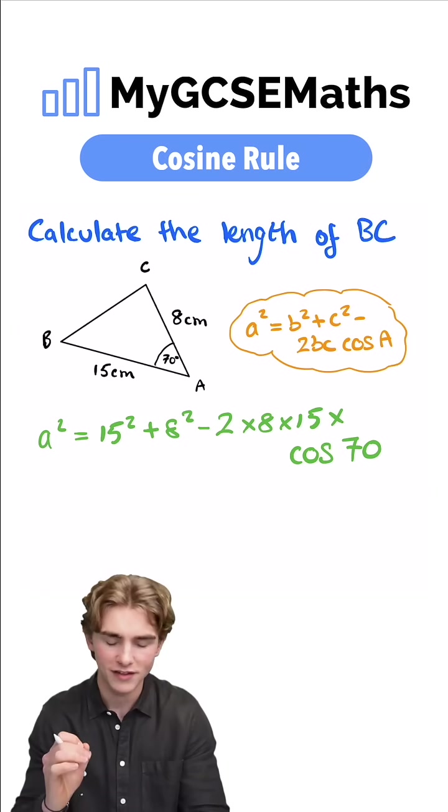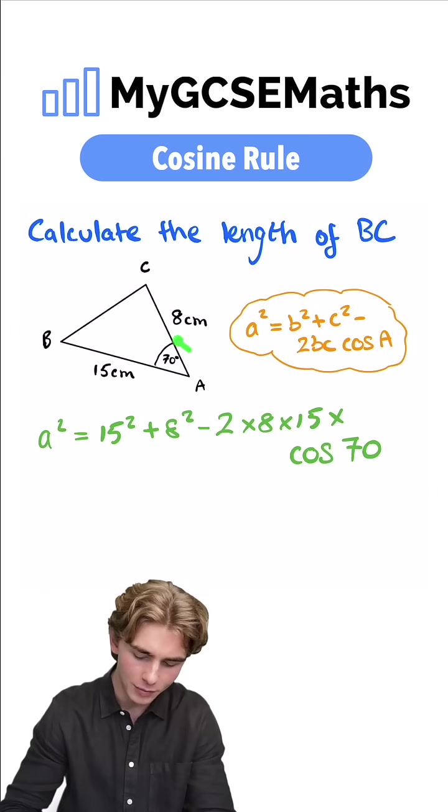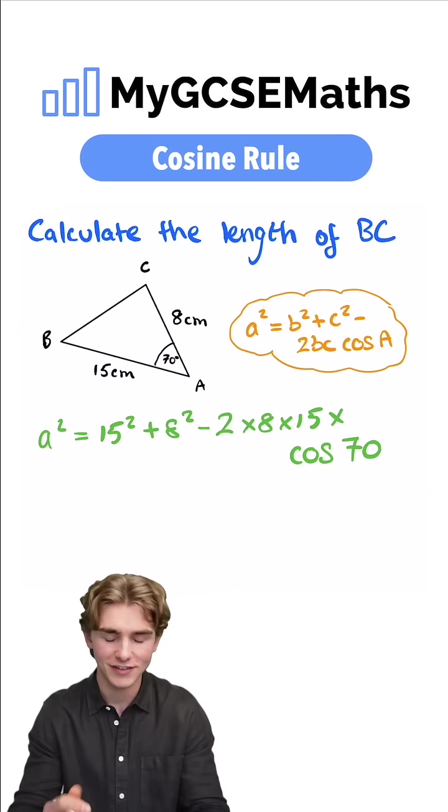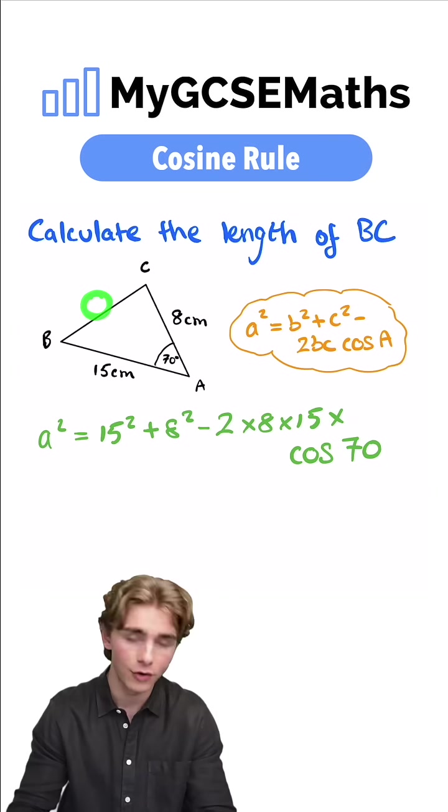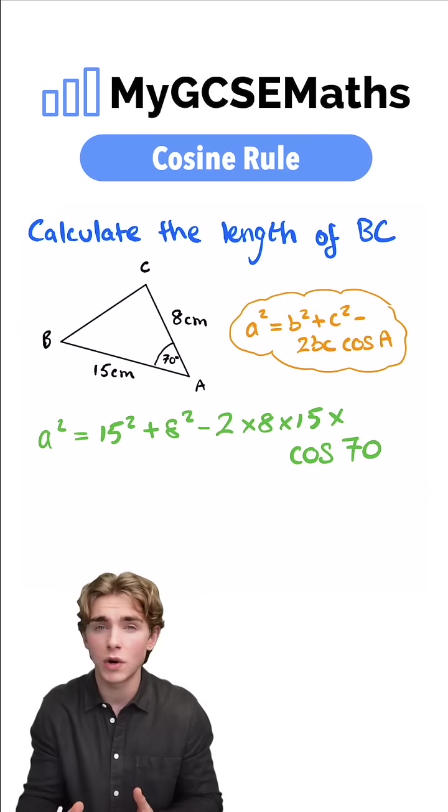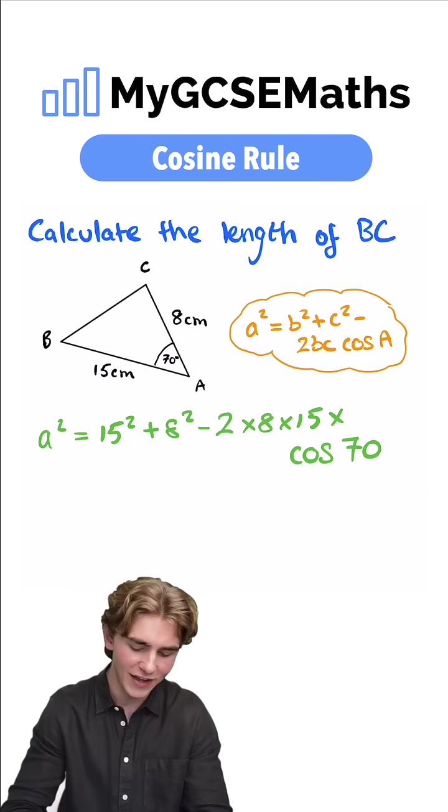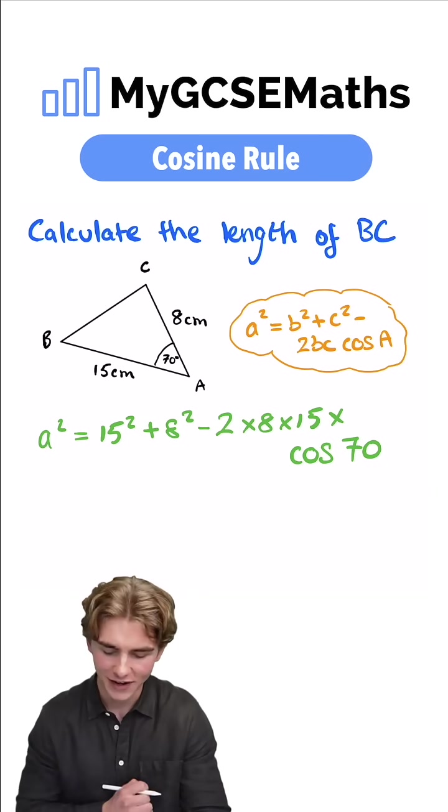Now I just want to make this very clear. Our angle is going to be this capital A here and lowercase a has to be the side length opposite the angle. Now b and c it doesn't matter which way around those two are but lowercase a has to be opposite our angle capital A.